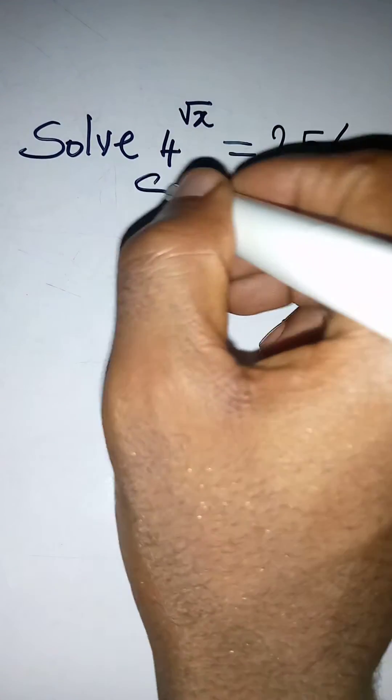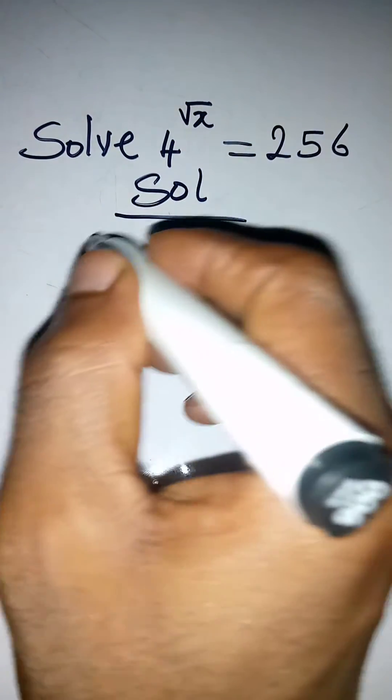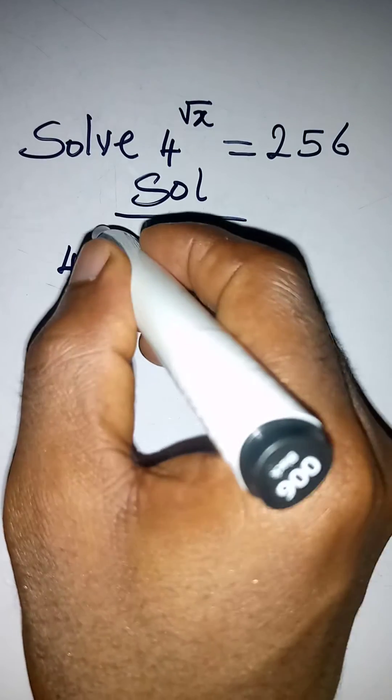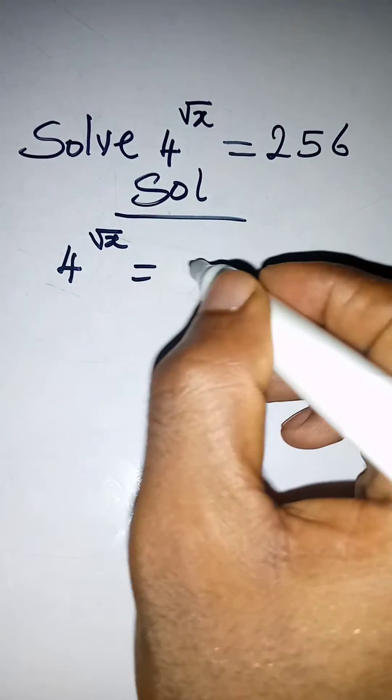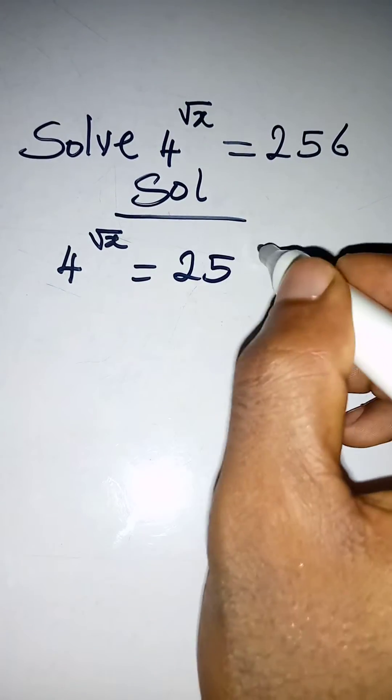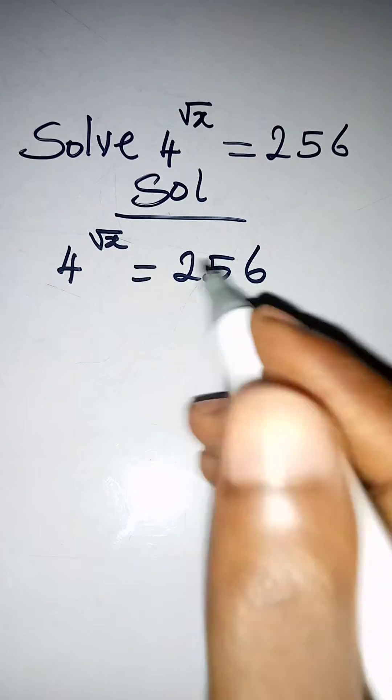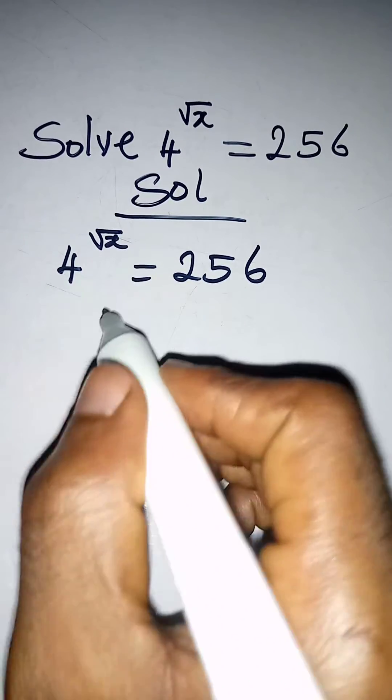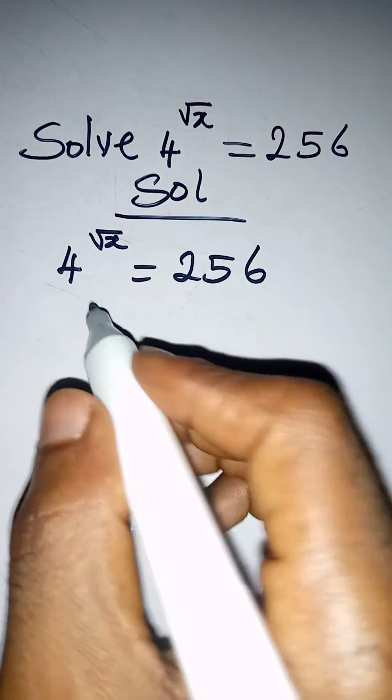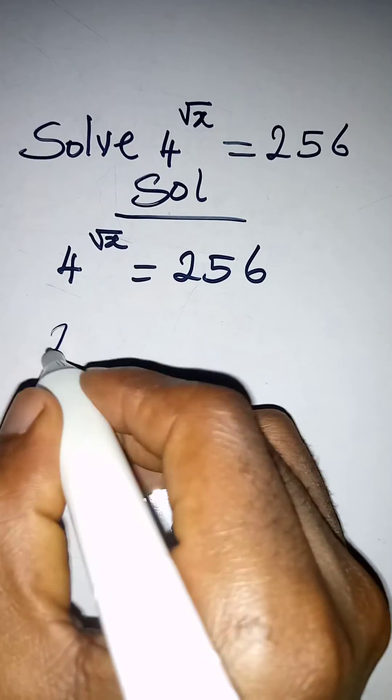Hello everyone, let's solve this problem quickly: 4 to the power of root x equals 256. So from here I want us to have the same base, right?